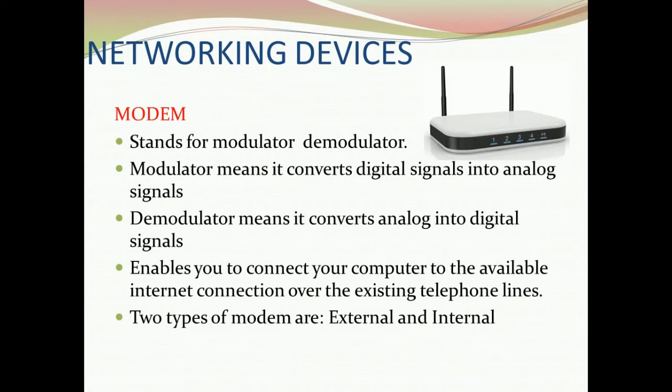If I want to send a file from my computer to another device using telephone lines, the file will be sent by the computer in digital form. To enable the transmission of the file via phone line, it should be converted into analog form — this work is done by the modem. At the destination, the receiving modem further converts analog signals into digital signals so the data can be understood at the receiving end.